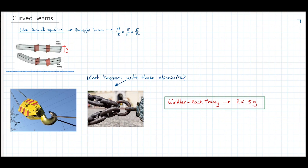When we have a straight beam, the initial configuration before applying forces and before deforming is straight. There is a theory called the Euler-Bernoulli equation — a theory that makes a lot of assumptions and disregards many phenomena happening inside the body to come up with an equation relating forces to deformation.